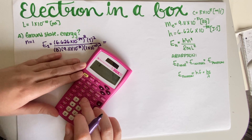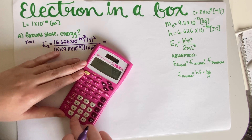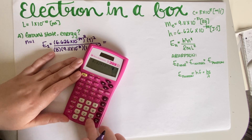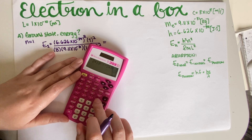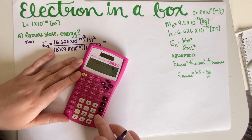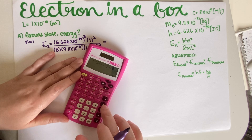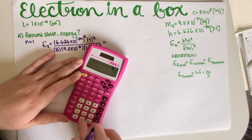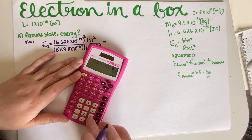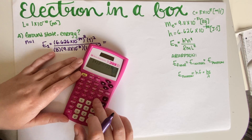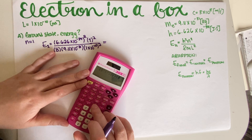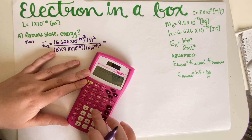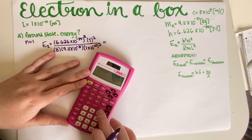Entering into the calculator: (6.626 × 10⁻³⁴)² divided by 8 times (9.11 × 10⁻³¹) times (1 × 10⁻¹⁰)².